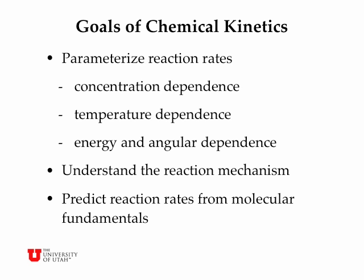The overall goal of chemical kinetics is to parameterize reaction rates, so that we can understand the concentration dependence of the rates and the temperature dependence of the rates, in order to be able to predict the rate of any chemical reaction under a wide variety of conditions. Sometimes we can get at the energy dependence and angular dependence of chemical reaction rates, using fancy molecular beam experiments. And the overall goal is to understand the underlying reaction mechanism, the details of the bond-breaking and bond-making processes that govern the overall rate of any chemical reaction. And ultimately we want to be able to predict reaction rates from molecular fundamentals, things like masses and energies of reactants.